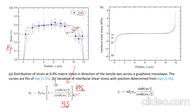Plotting the interfacial shear stress derived from the equation: if the fiber is in the middle, the shear stress decays to zero away from the fiber ends. But near the fiber tips, the shear stress rises sharply and is very large. It follows the derived equations — a very elegant result.